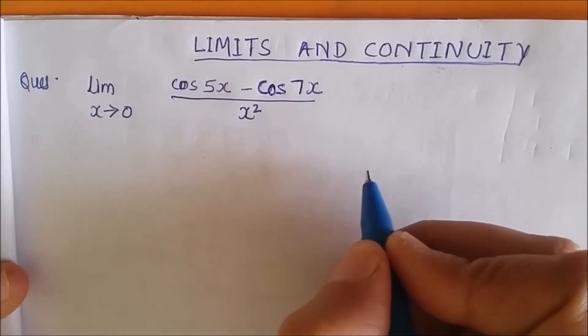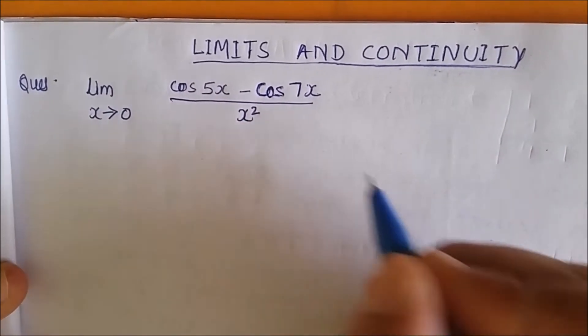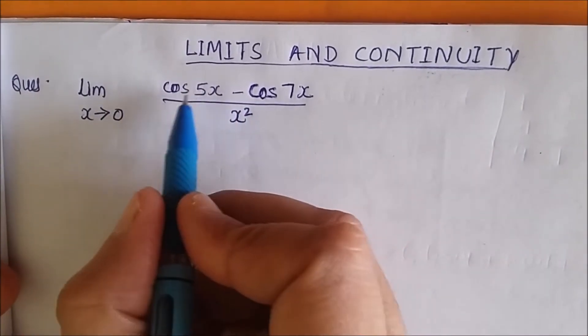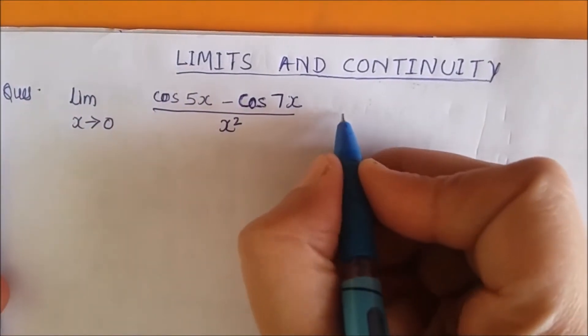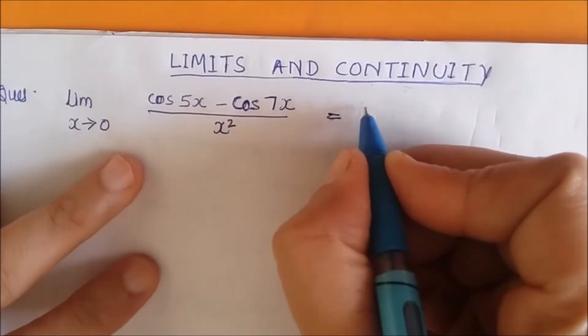For this question it is clearly seen that this is cos c minus cos d, so we can use the c minus d formulas. This will reduce to 2 sin (c+d)/2.